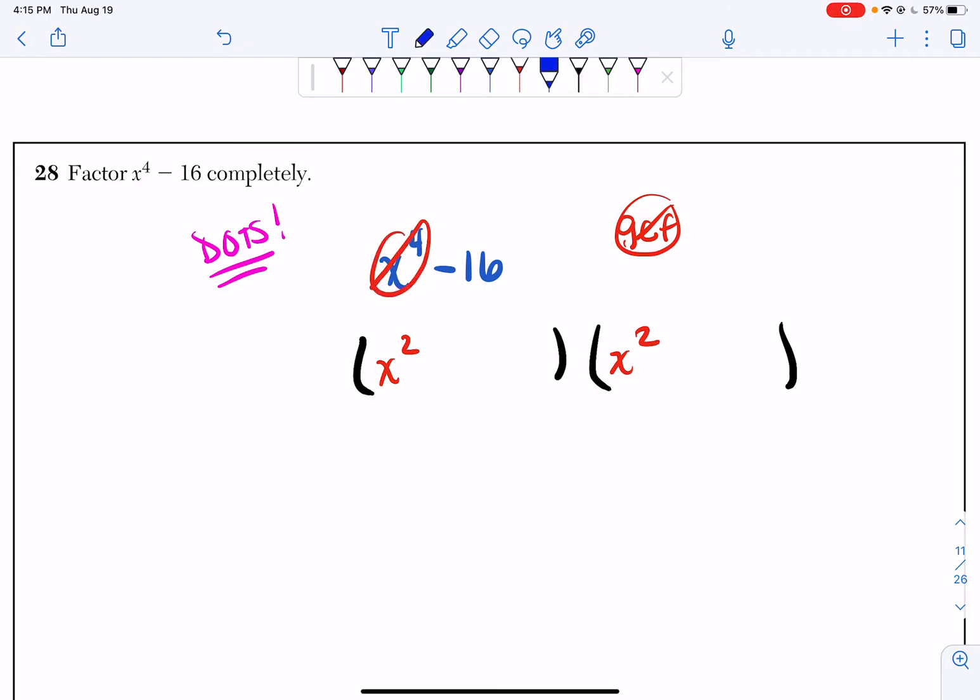Now I have my minus, so I'm going to have a plus minus, and I ask myself what number times itself is 16. You got it, it's 4, because 4 times 4 is 16.